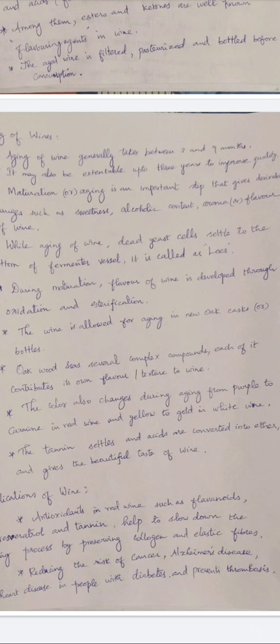Wine is allowed to age in oak wood barrels or sometimes oak bottles. Oak wood contains several complex compounds and flavoring agents, each contributing to the flavor and texture of the wine. The color also changes during aging — from purple to carmine in case of red wine, and from yellow to gold in case of white wine. Tannins and acids are generally converted into ethers during aging, also contributing to the taste.